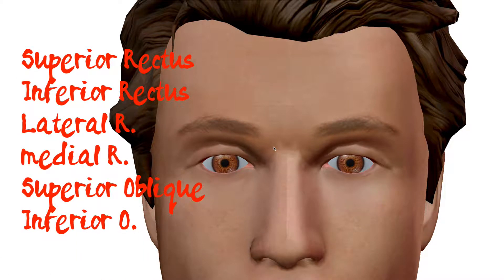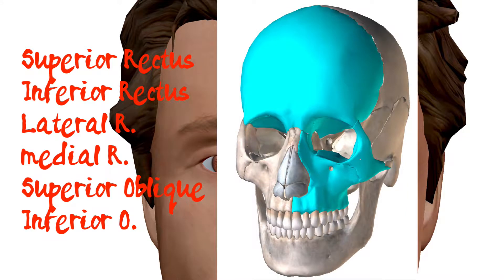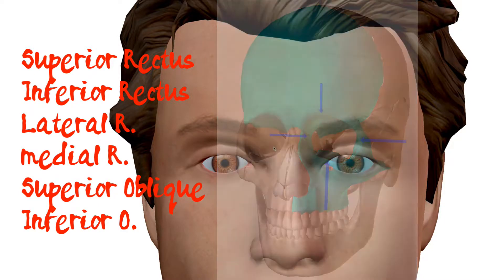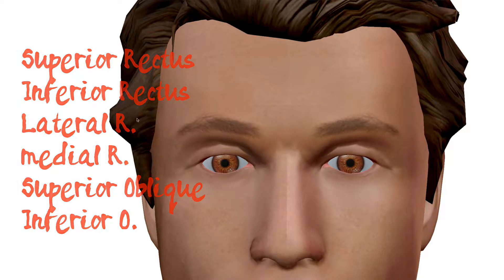Now the eye itself is encased in an orbit. You've got a medial wall, you've got a roof, you've got a lateral wall, and then you've got the floor — the maxilla. So you have the cranial cavity and the facial bones that pretty much create that orbital cavity where the eye sits, and the muscles are kind of surrounding the eye.